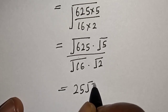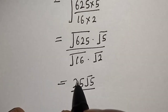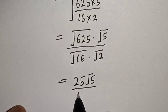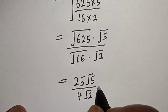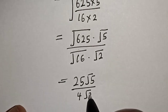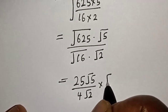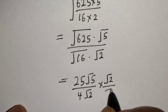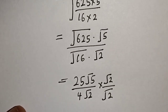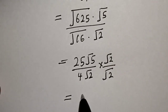We have 25 times the square root of 5, over the square root of 16 times the square root of 2. The square root of 16 is 4, giving us 25 root 5 over 4 root 2. Now we multiply both numerator and denominator by root 2.